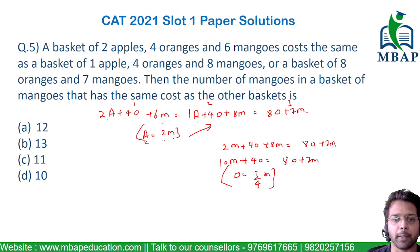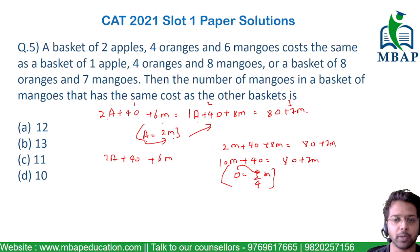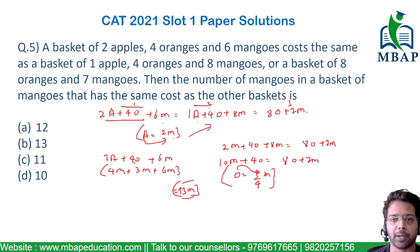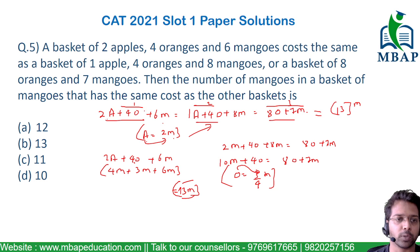Now I can convert apples and oranges to mangoes. Taking the first basket: 2 apples plus 4 oranges plus 6 mangoes. Substituting: 2 times 2M gives 4 mangoes; 4 times 3/4 M gives 3 mangoes; plus 6 mangoes already. So 4 plus 3 plus 6 equals 13 mangoes. The overall cost equals a basket of 13 mangoes, so the answer is option B.